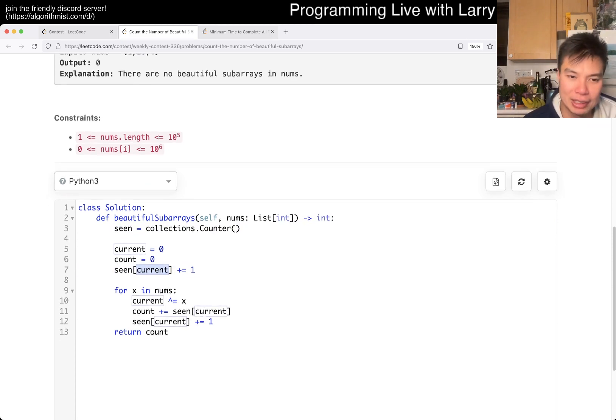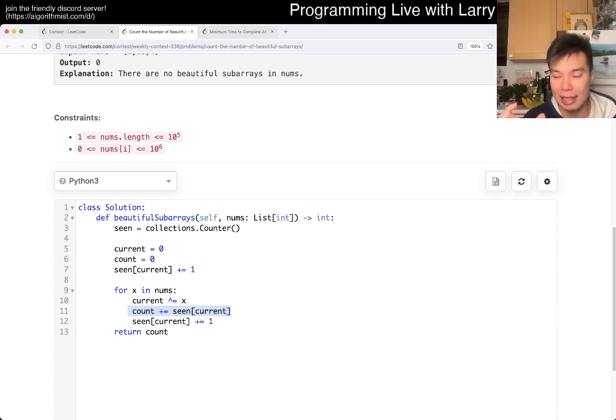For prefix sum, this is for the length 0 prefixes. And then for each one, we update the prefix sum to the current. And then we see how many times we've seen it before, because those numbers will XOR to 0 with the current thing. Then we just add 1. And at the end, we return the number of times we counted. That's the answer.